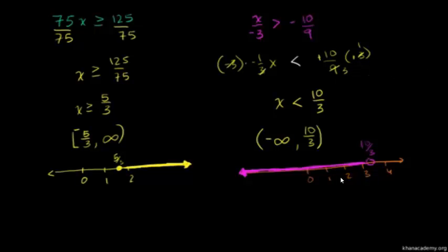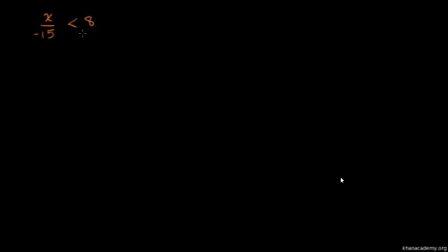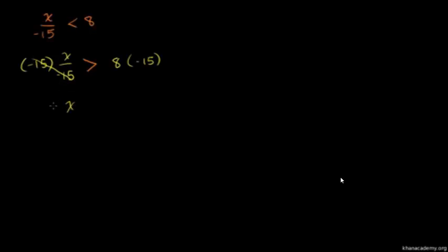Let's do one more: x over negative 15 is less than 8. Multiply both sides by negative 15. When you multiply both sides of an inequality by a negative number, you swap the inequality — less than becomes greater than. The left-hand side becomes x, these cancel out. 8 times 15 is 120, and since it's negative, we get x is greater than negative 120. The solution set in interval notation is negative 120 with a parenthesis — we're not including negative 120 — going up to infinity.